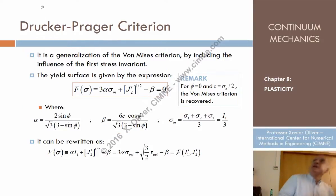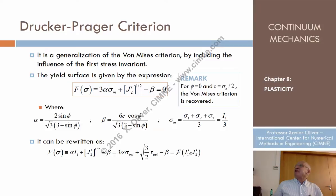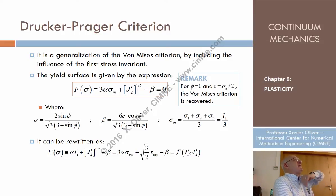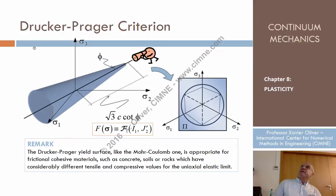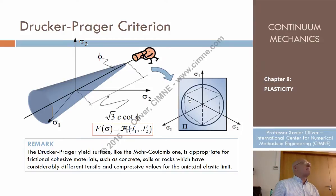There is a variation called the Drucker-Prager criterion. Mathematically it's relatively different — it depends on the cohesion and friction angle, but does not depend on the third invariant. If it doesn't depend on the third invariant, it has axial symmetry, meaning it is represented by a cone. The Drucker-Prager criterion is a cone that circumscribes the Mohr-Coulomb prism.